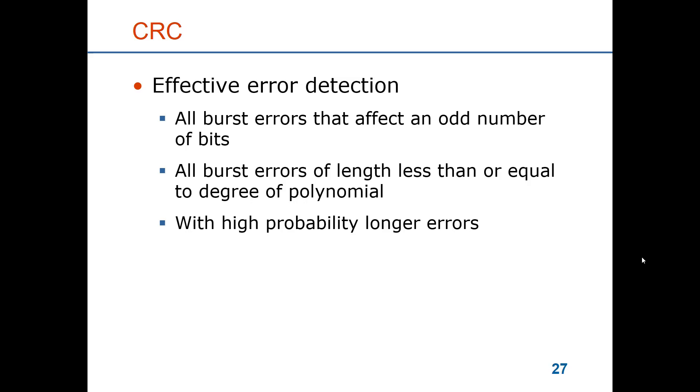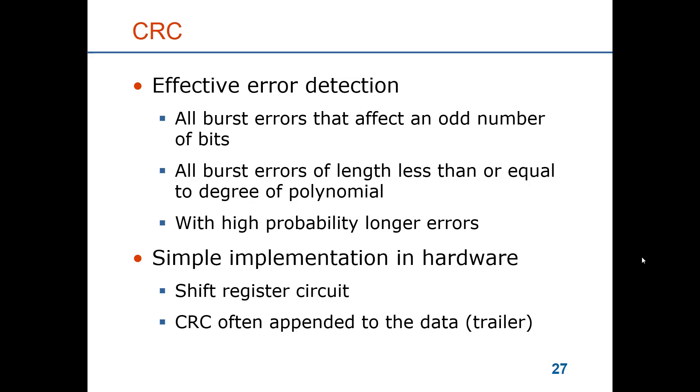So CRCs are very effective for error detection. They can detect burst errors in many cases and they detect single bit errors even multiple single bit errors. They are simple to implement in hardware as shift register circuits. And if you recall from the early lecture material on framing, you saw there was a trailer in the data link frame. And that trailer holds the redundancy that has been computed according to the cyclic redundancy check on the sender side.